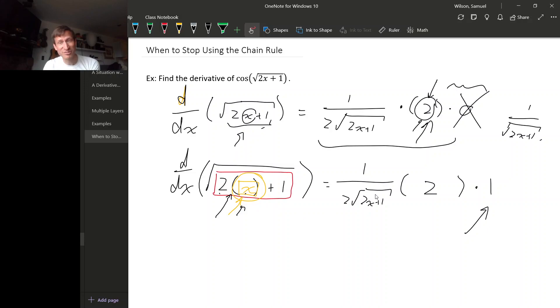And that's how you know you're done. If you're doing the chain rule layer by layer and you hit just a times 1, that's when you know you're done.